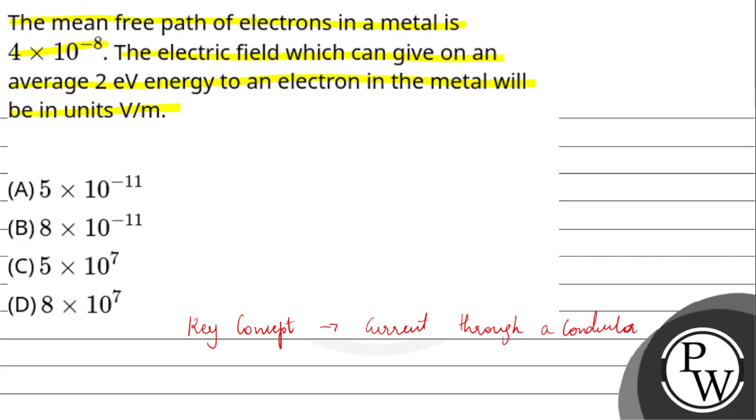So the current through a conductor is the movement of free electrons when an external electric field is applied.